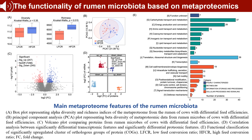Metaproteomics reveals the real functions of the Rumen microbiome. Our analysis showed no significant Shannon index difference between high and low efficiency groups, but the Chao1 index was higher in high efficiency cows. PCA and Bray-Curtis analysis revealed significant microbial community structure differences. We identified 247 upregulated and 245 downregulated proteins in high efficiency cows, mainly involved in metabolism and cellular processes.